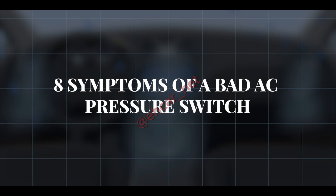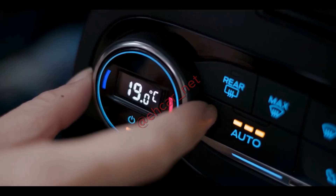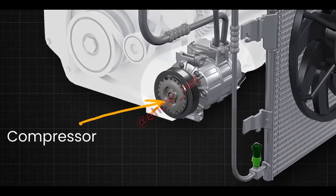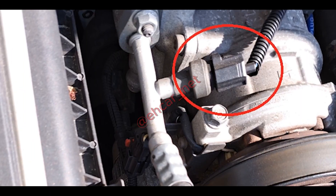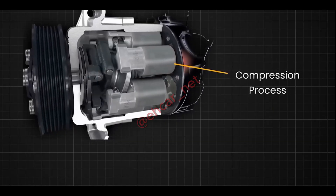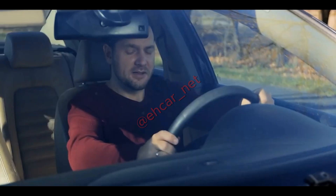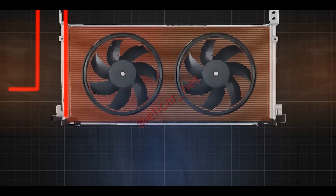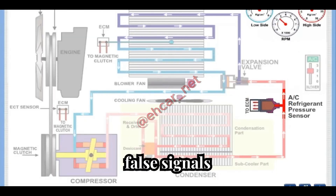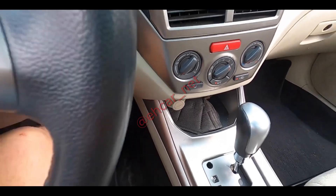Eight symptoms of a bad AC pressure switch. If your AC is blowing warm air despite setting it to maximum cool, the pressure switch might not be signaling the compressor properly. Another clear sign is when the AC compressor doesn't engage — without the compressor running, you won't get any cool air. One of the most frustrating symptoms is intermittent cooling: one minute you're cool, the next you're sweating, and this inconsistency is a classic sign of a failing switch. If your AC randomly shuts off while you're driving, it's likely that the pressure switch is sending false signals, causing the system to turn off to prevent damage, or it's simply failing.